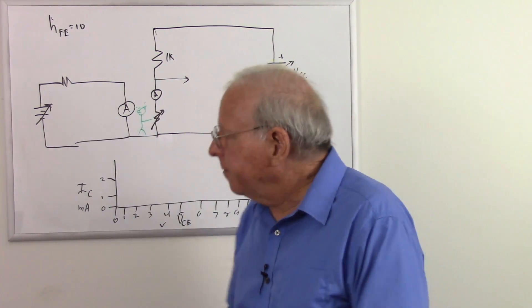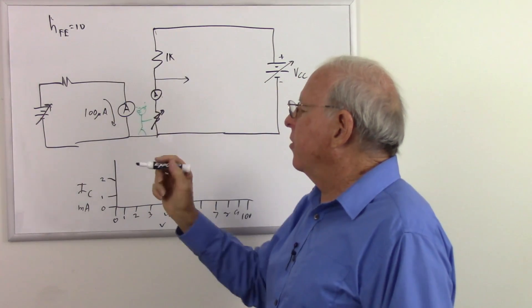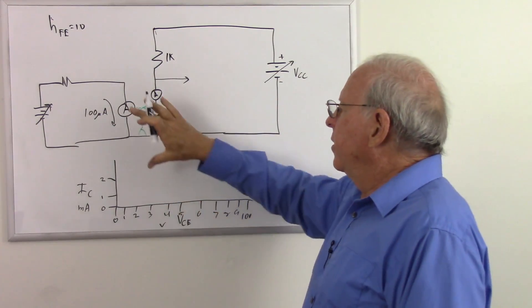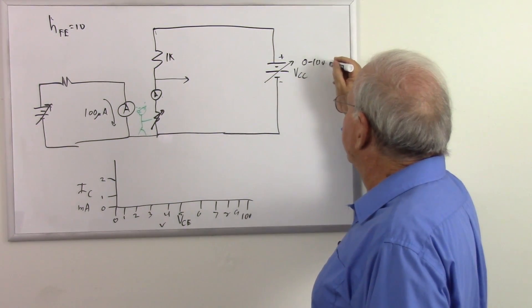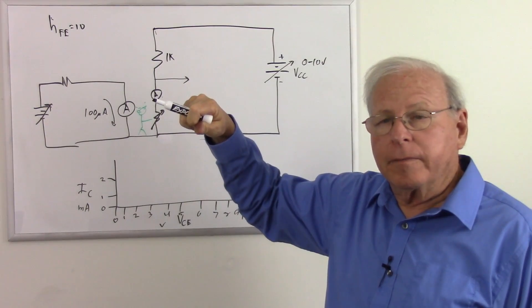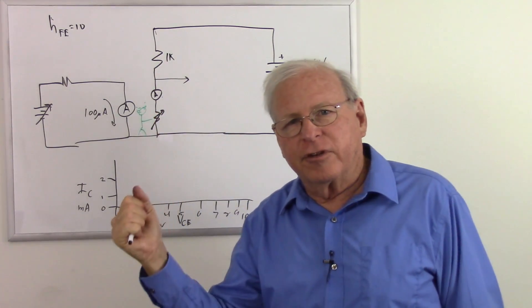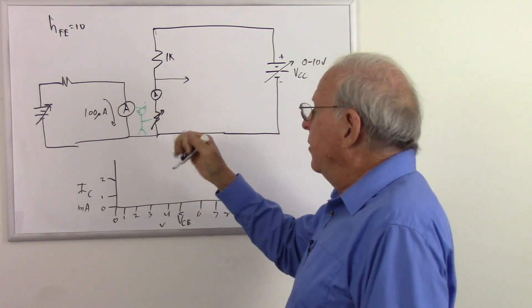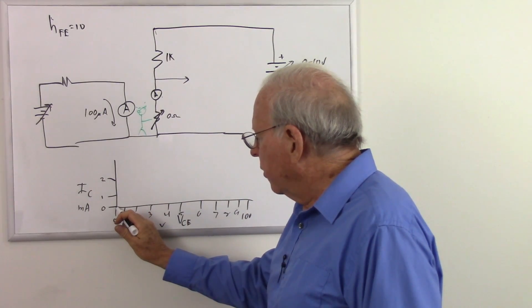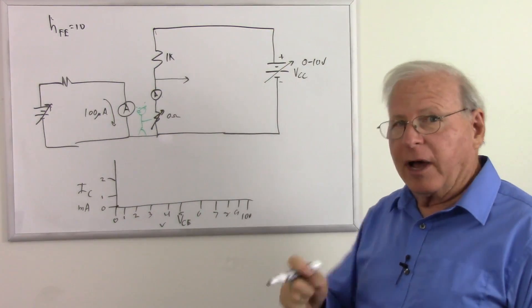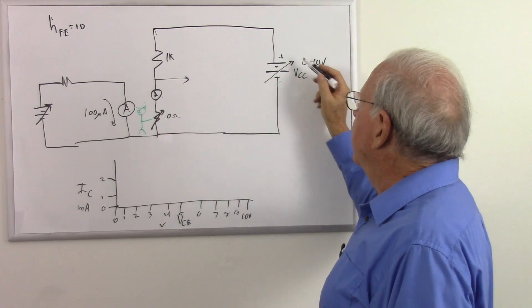We're going to start at 100 microamps as our base current. He sees the HFE of 10, so he adjusts his resistor until he sees 1 milliamp. Except there's one problem: this is 0 to 10 volts, and I'm going to start with that at 0 volts. So at 100 microamps, he cranks his resistance all the way down to 0 ohms and gets no current. So we have no voltage, no current — we're sitting right there. He says, sorry boss, I can't give you what I don't have.